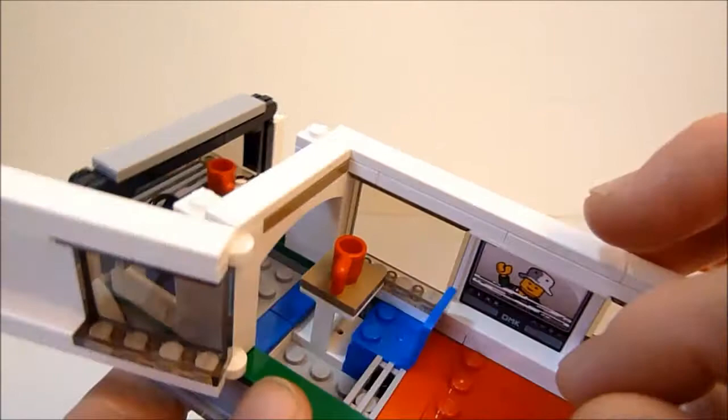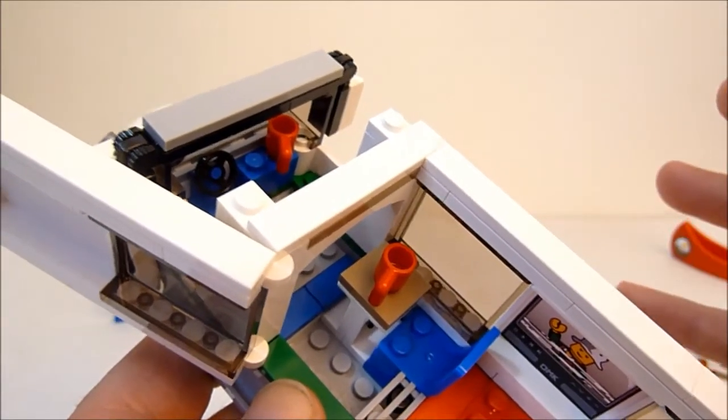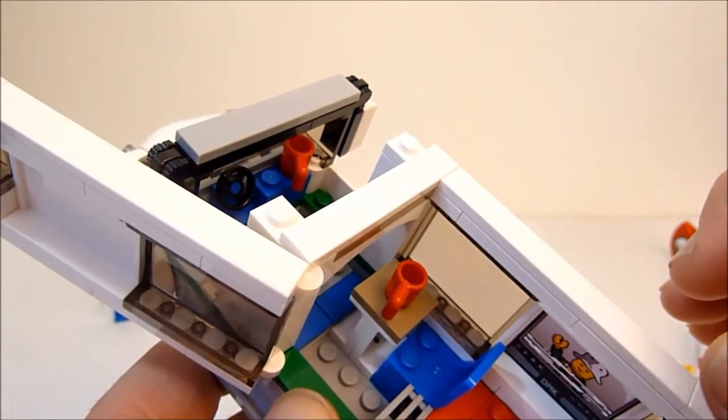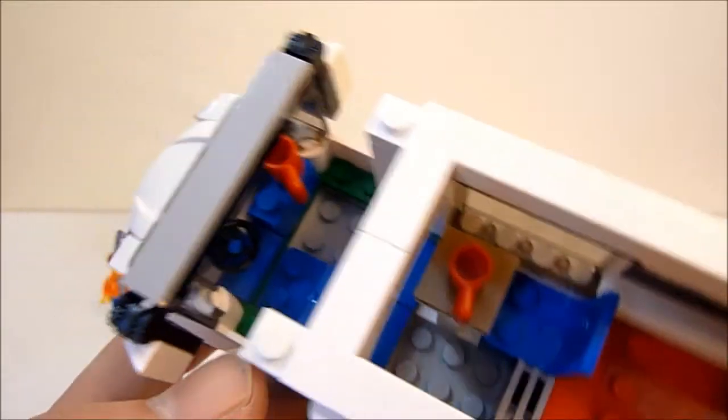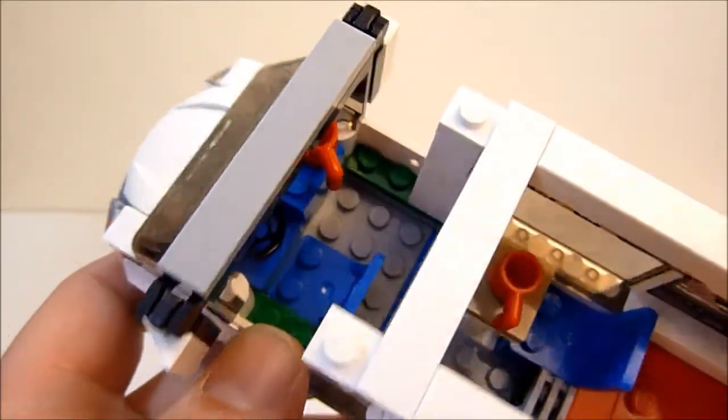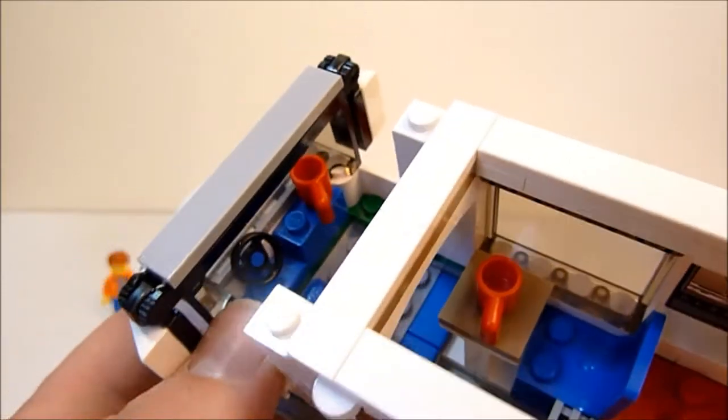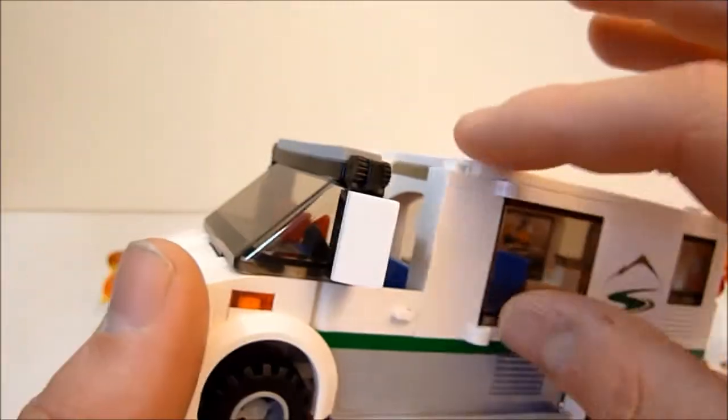You also get a little table with the always needed little red coffee cup there. You actually get two. And that brings us up to the driver's compartment here. There is only room for one to actually sit up here, but it's nicely laid out. You get the little cup, the little steering wheel and a seat. And you also get the opening and closing doors.